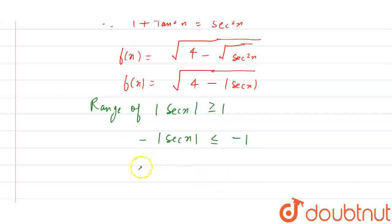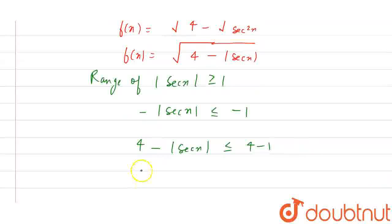So similarly we can say that 4 minus mod of sec x is less than or equal to 4 minus 1. So from here we get the value that 4 minus mod of sec x is less than or equal to 3.